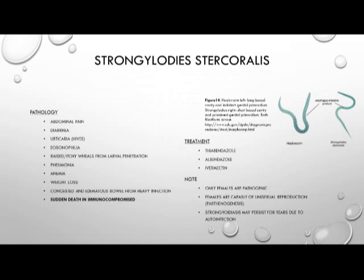The pathology of Strongyloides stercoralis can cause abdominal pain, diarrhea, hives, eosinophilia, raised itchy welts from the site of larval penetration, as well as pneumonia, anemia from blood loss, weight loss, and sudden death in immunocompromised individuals. The top right image shows distinguished features of the hookworm and Strongyloides stercoralis.